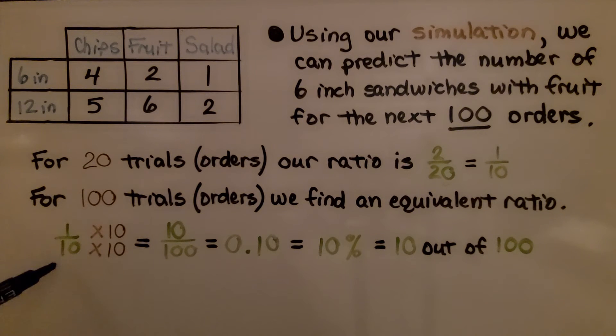We have 1/10, and we need to multiply this by 10. We need to multiply the numerator by the same thing. We have 10/100. We can write it as a decimal, 0.10, and we don't need this trailing zero. We can write it as 0.1. It's also 10%, which tells us 10 out of 100 of the next orders will be 6-inch sandwiches and fruit.